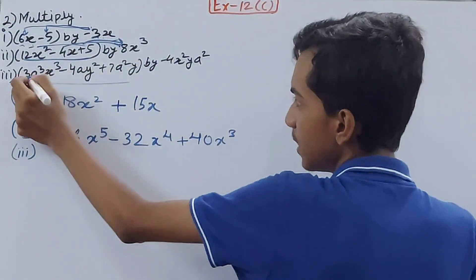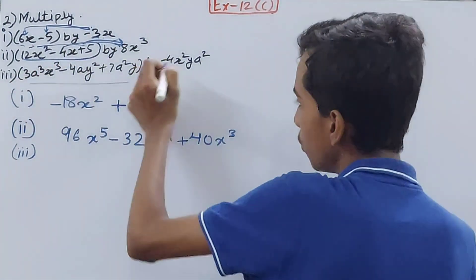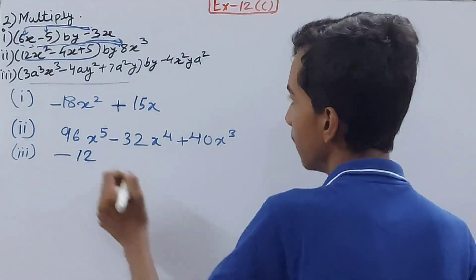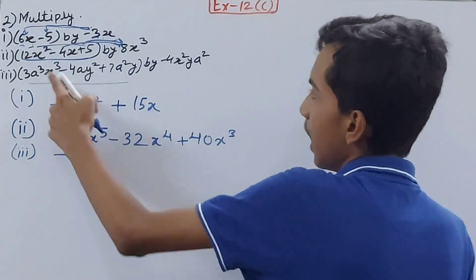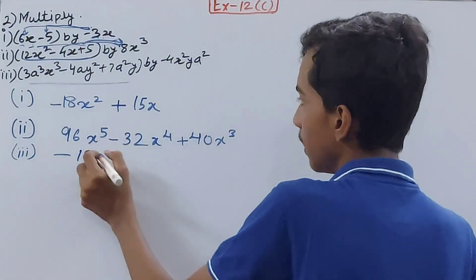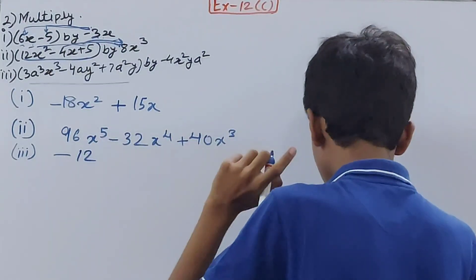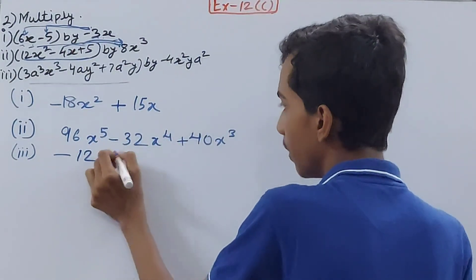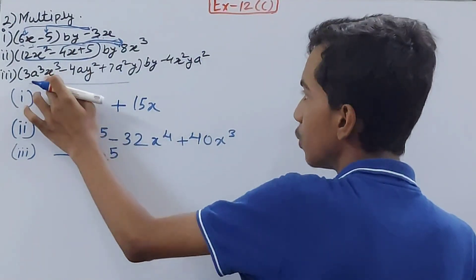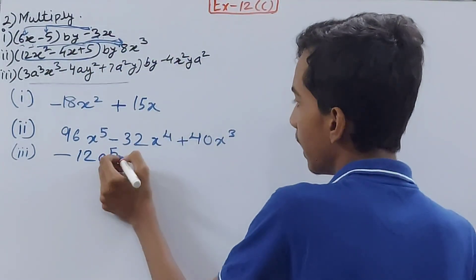3 into -4 gives -12. a³ into a² is a⁵. x³ into x² is x⁵.